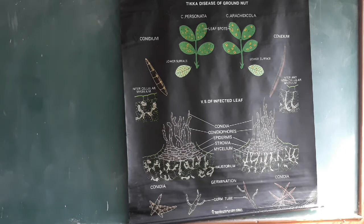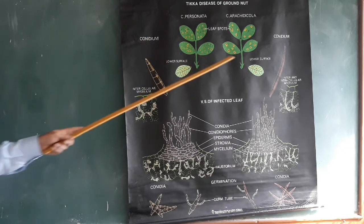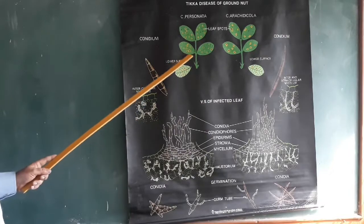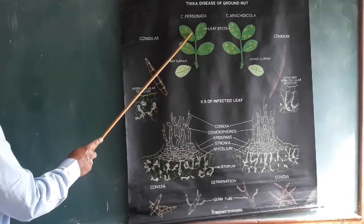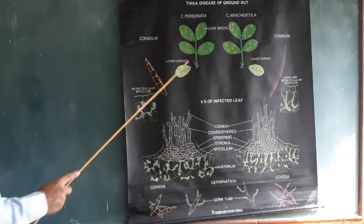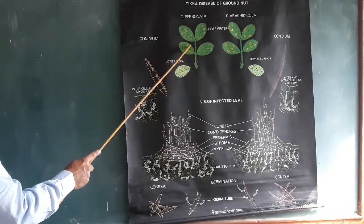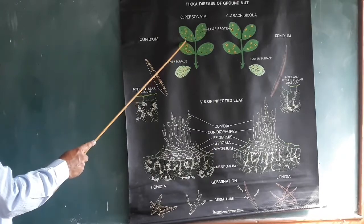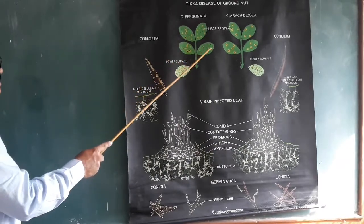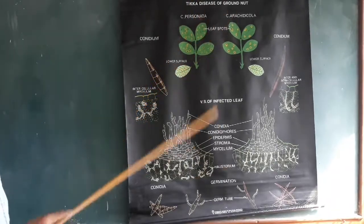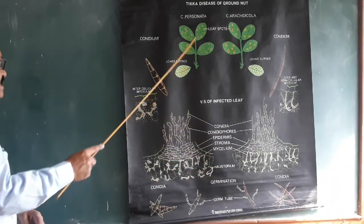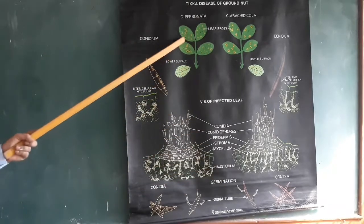The first symptom is the appearance of pale areas on the upper surface of older leaves. Later, the spots become dark brown to black in color. Initially the spots are brown, then yellow halos — that is, yellow rings — develop around these spots. Finally, spots progress from pale brown to dark brown and then to black.